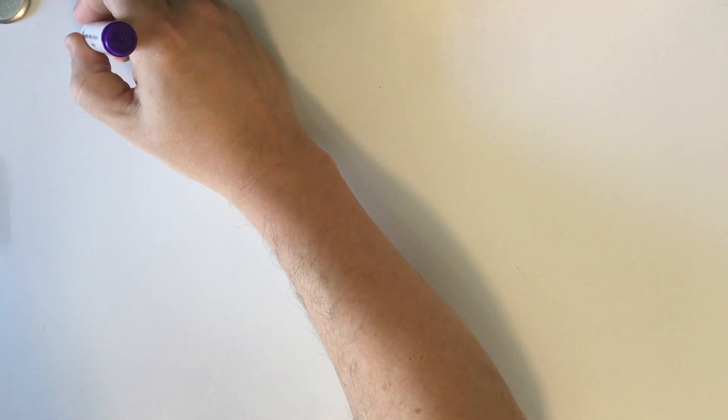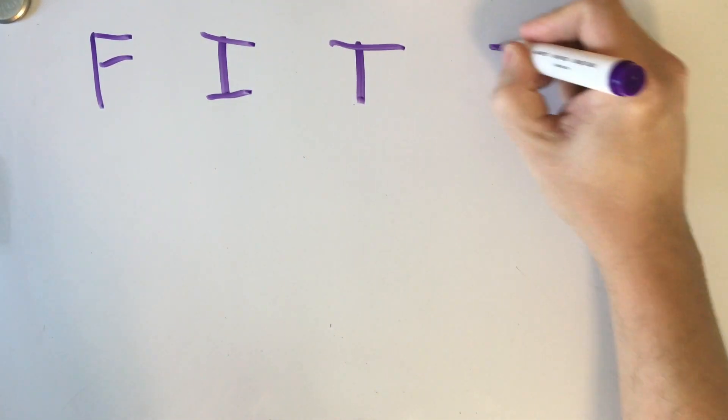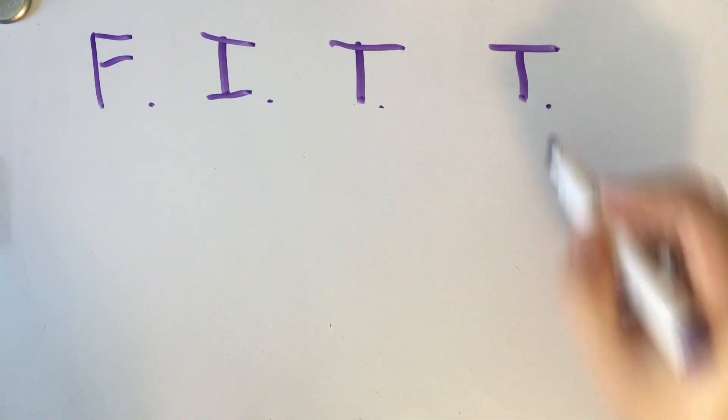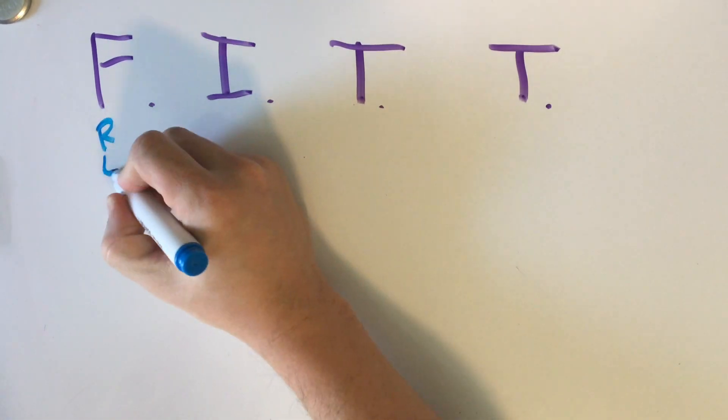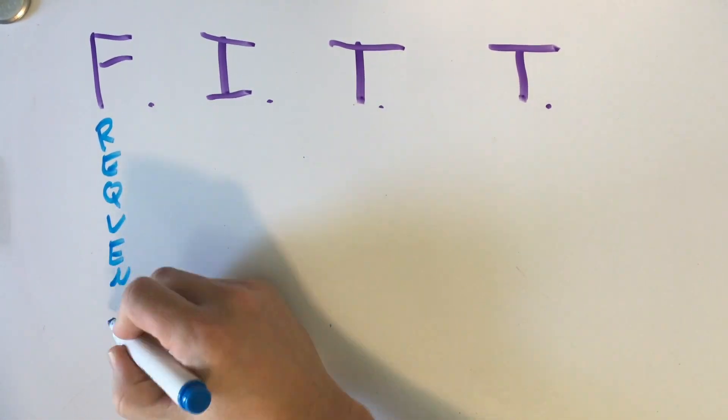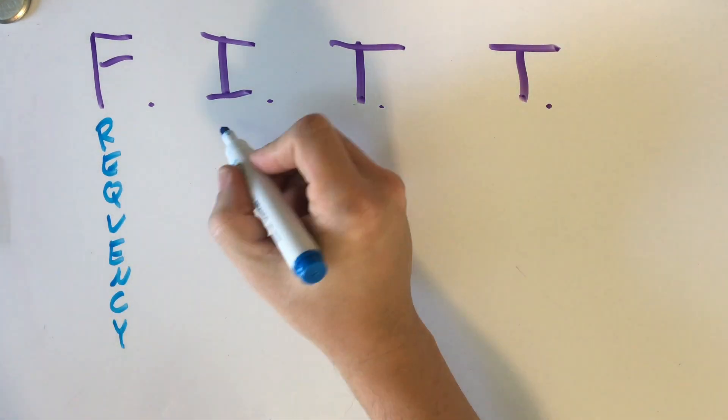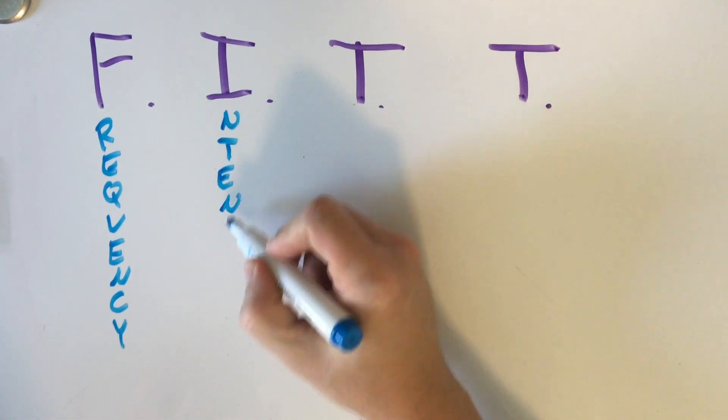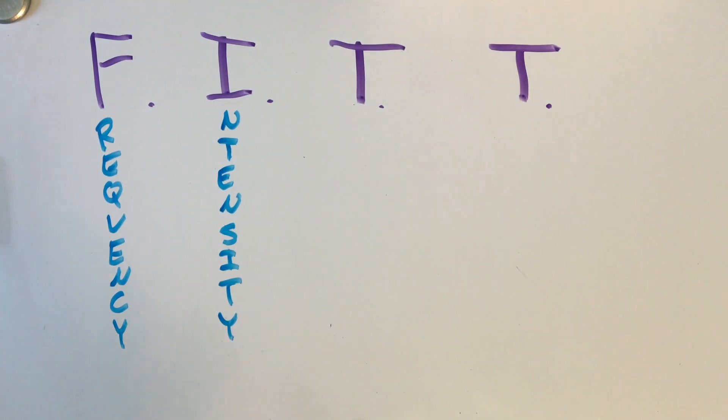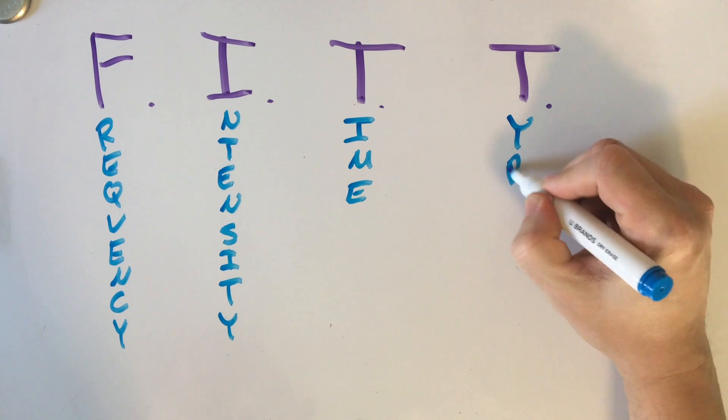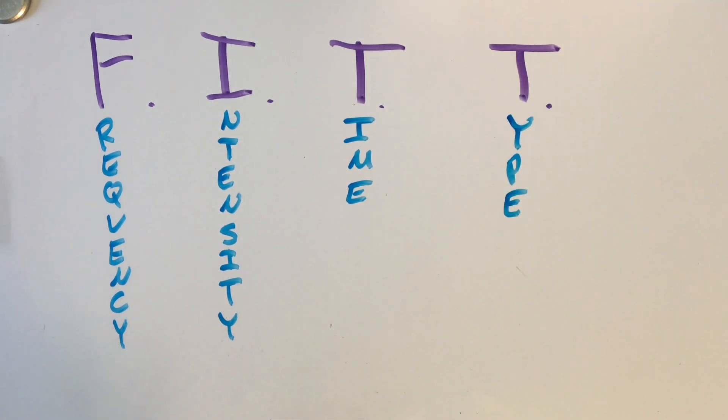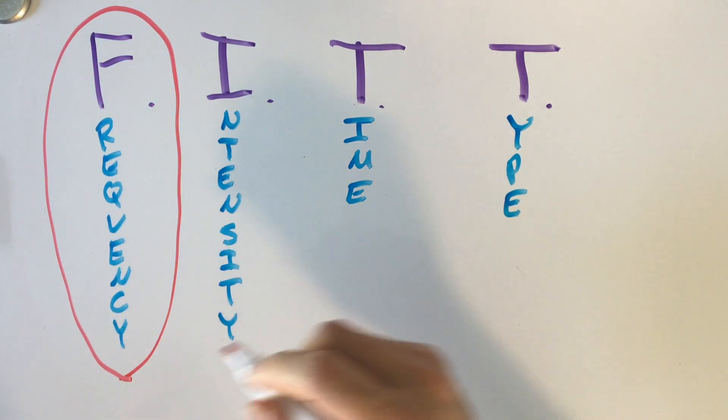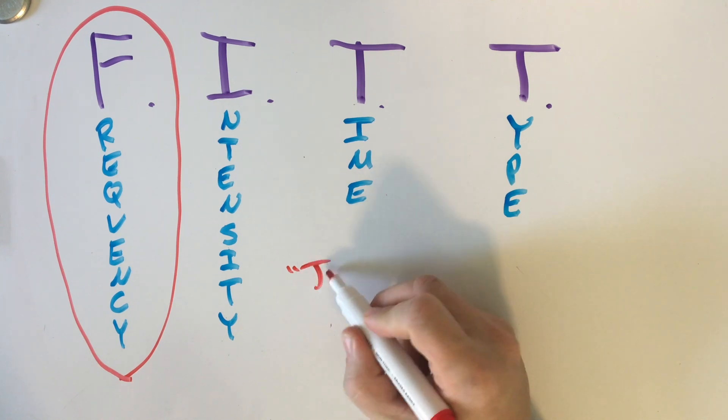So the FITT Principle, if you don't know what that is, is just a simple way of understanding all the components that go into designing an exercise program. F is going to be frequency of your exercise, I is intensity of the exercise session, the first T is the time or how long that exercise session will last, and then the last T is usually referred to as the type of exercise you are doing.